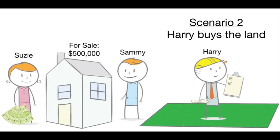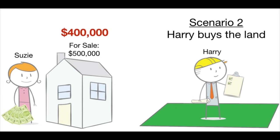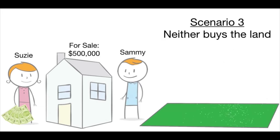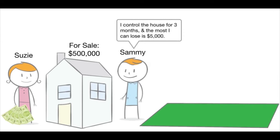In scenario two, Harry buys the nearby parcel of land, decreasing the value of Susie's home to say $400,000. Sammy will not exercise his option to buy at $500,000 and walks away having lost only $5,000. In scenario three, neither party buys the land; Susie's house is still worth $500,000, and Sammy can elect to exercise his option or simply walk away losing only $5,000. In effect, Sammy is controlling a $500,000 asset for three months for only $5,000 — the most he can lose.